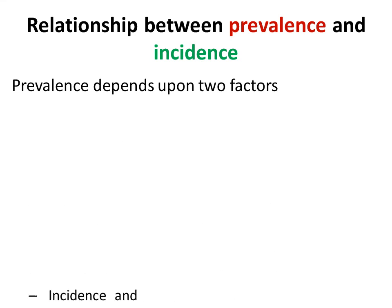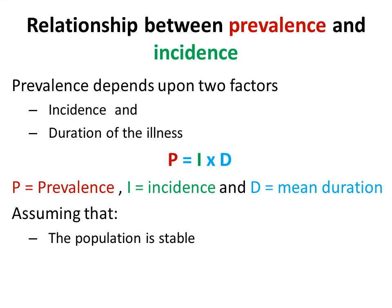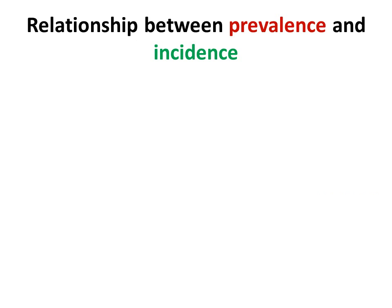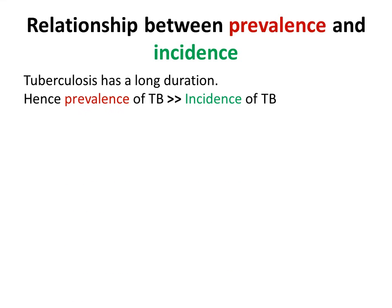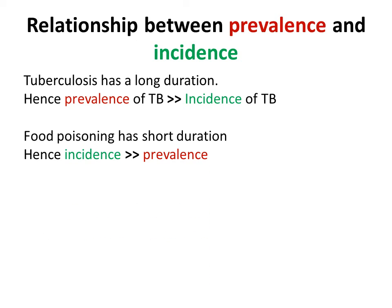The relationship between prevalence and incidence: prevalence depends upon two factors — incidence of the disease and the mean duration of illness. This is represented as: Prevalence = Incidence × Duration. This assumes the population is stable (not much migration) and that incidence and mean duration remain unchanged during the period. For example, tuberculosis has a long duration, so its prevalence is much greater than its incidence. Conversely, food poisoning has a short duration, so its incidence is much greater than its prevalence.